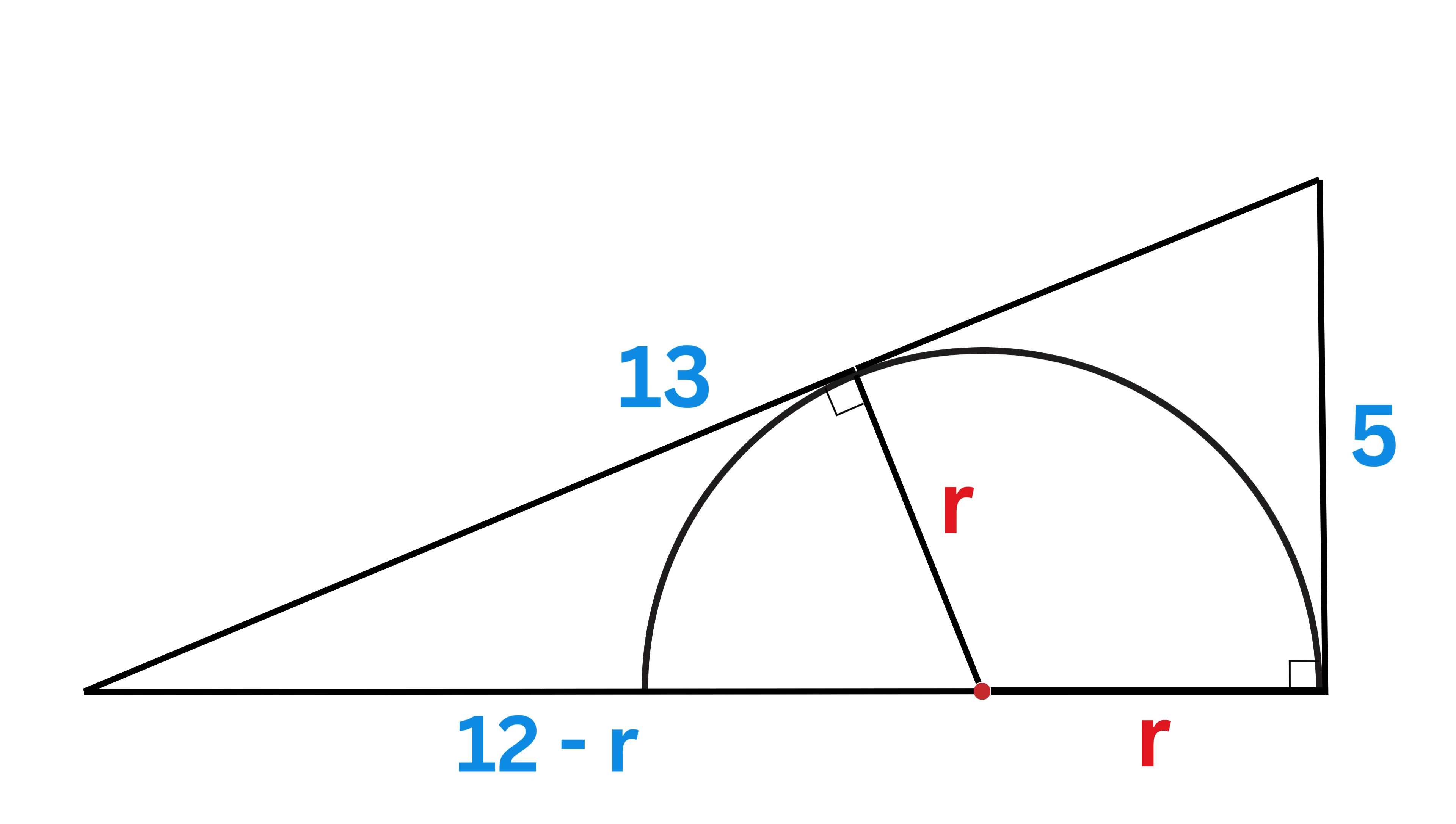For our case, point C acts as the external point through which we have these two sides as tangents to this semicircle. Therefore, this piece equals the length of this side. Since this is 5 units, this will also be 5 units. Therefore, this will be 13 minus 5, or 8 units.